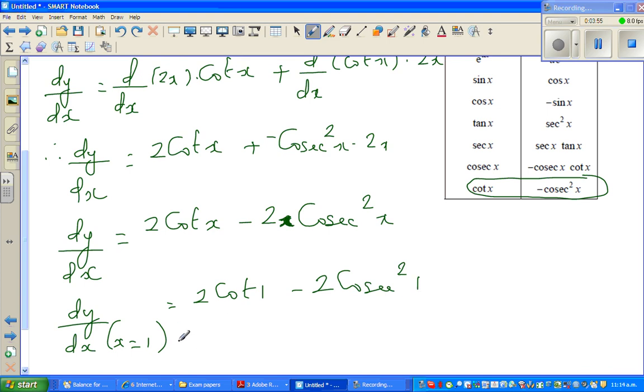So I say this is 2 times cot 1 minus 2 times 1 is 2 times cosec squared 1. So now to use this calculator, it doesn't have cot, so you have to go 2 times 1 divided by tan 1. Minus 2 times 1 divided by sin 1 squared. So this is my calculator.